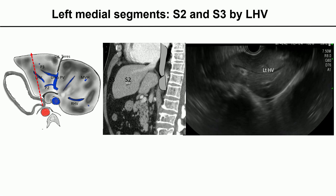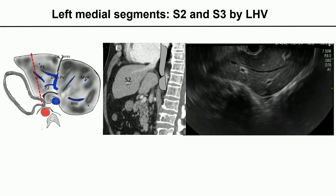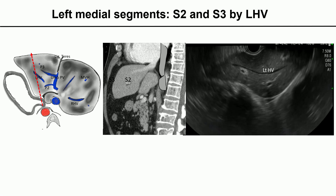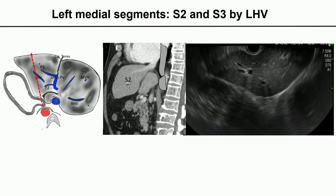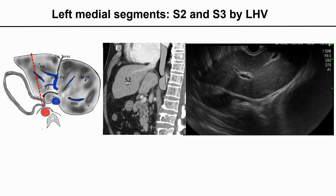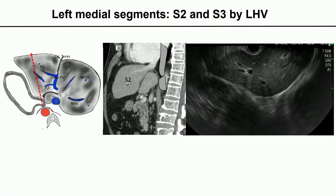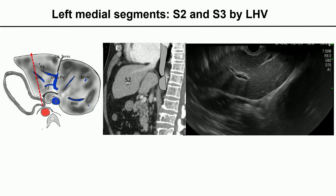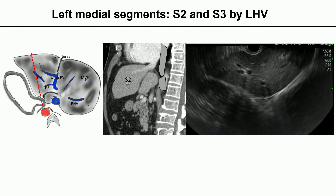From the stomach toward the left liver, S2 is close to the probe and S3 is farther away. The left hepatic vein separates S2 from S3. As shown in this video clip, the left hepatic vein separates S2 from S3, and we can see the P2 and P3 portal veins.